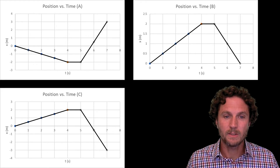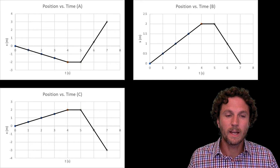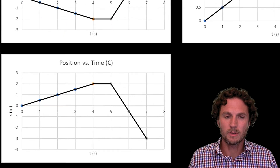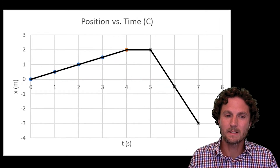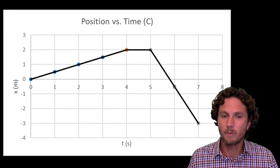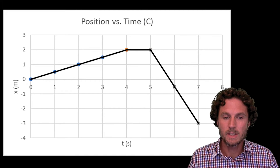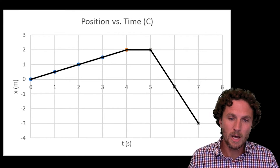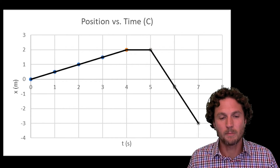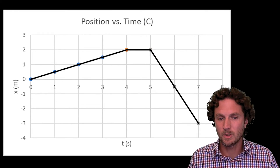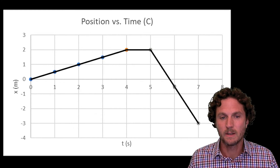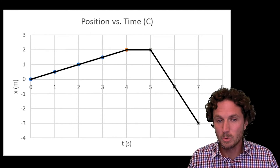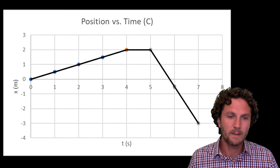The correct answer is C. Starting at the zero position, Maddie moved to the right at a relatively slow rate, which should show a positive but flatter slope. She then held her position for one second, and then jogged back to the left at a much quicker pace, so we expect a steeper negative slope — which is exactly what we see in graph C.